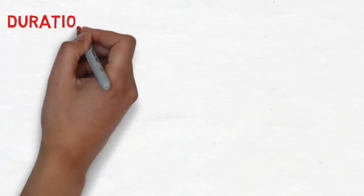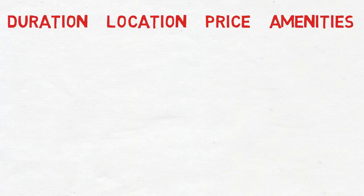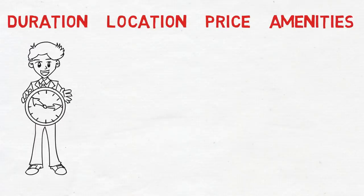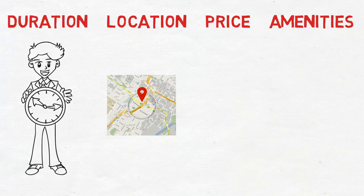Now let's talk in detail about finding temporary accommodation — the duration, location, price, and amenities. For duration, aim for two to three weeks at a minimum; one to two months is even better. For location, if you're in Toronto, try to get something in downtown Toronto if possible, as it makes commuting to different parts of the GTA much easier. Most cities have a city center or downtown area — it's better to start there.